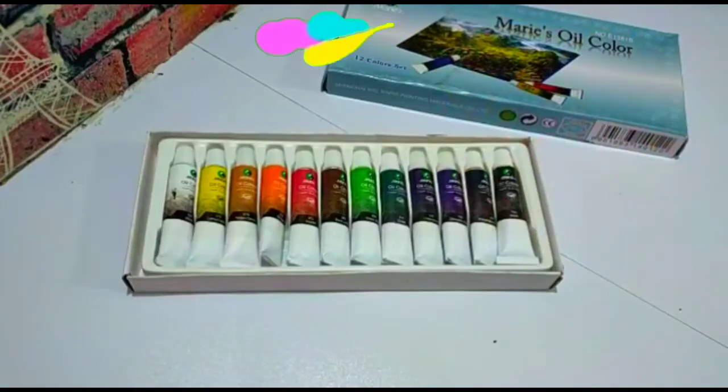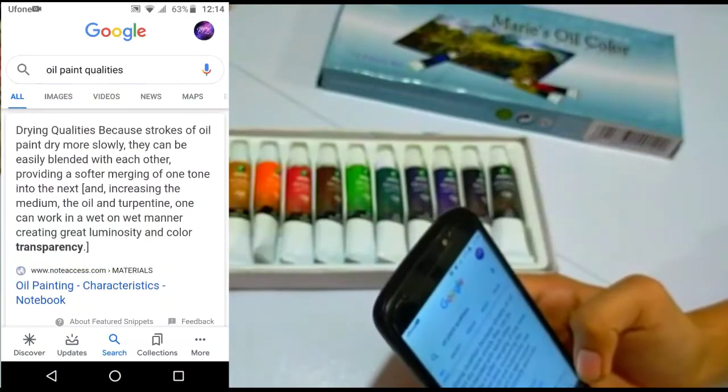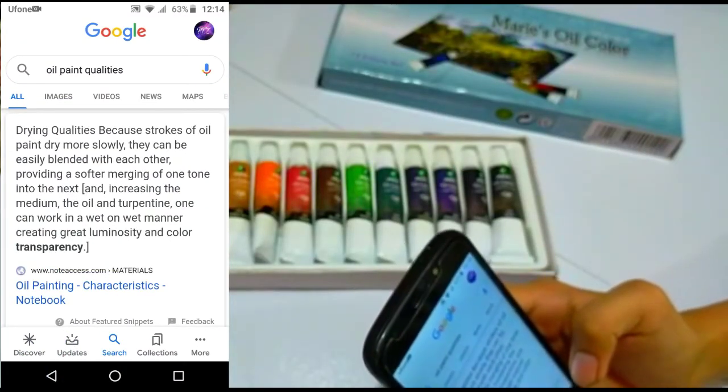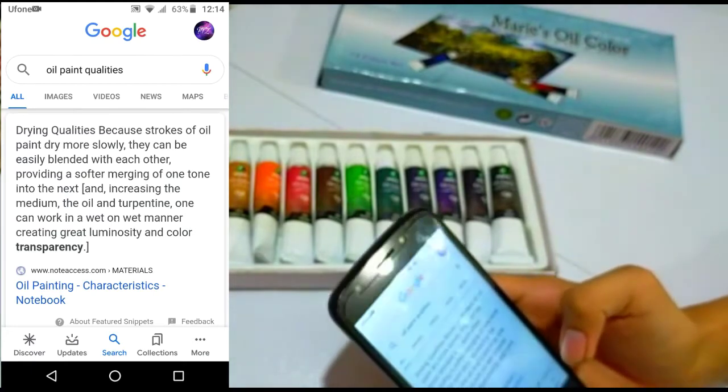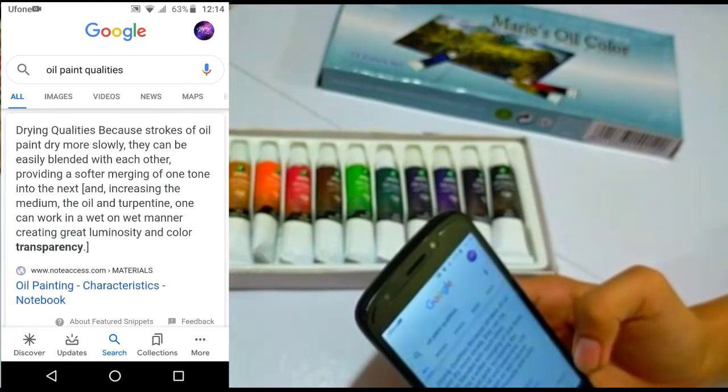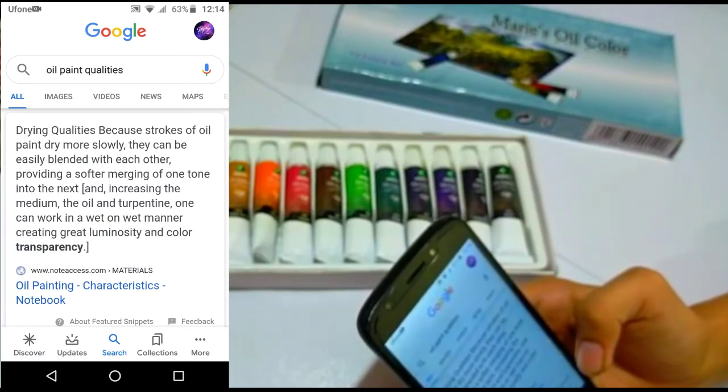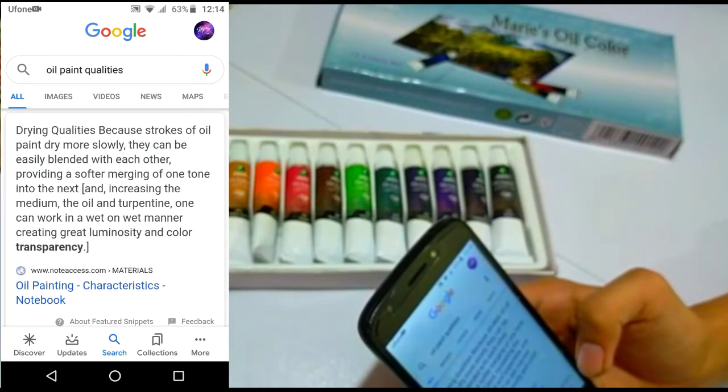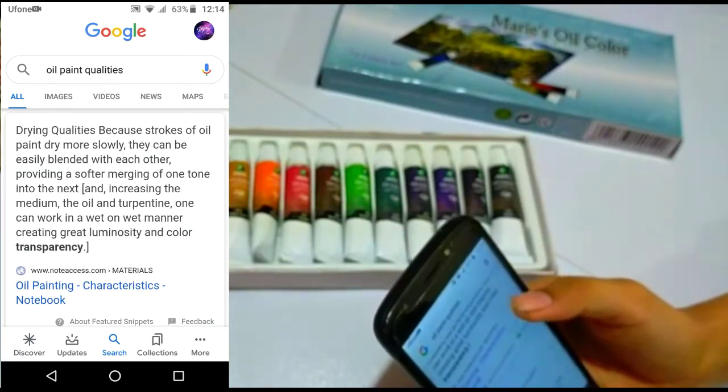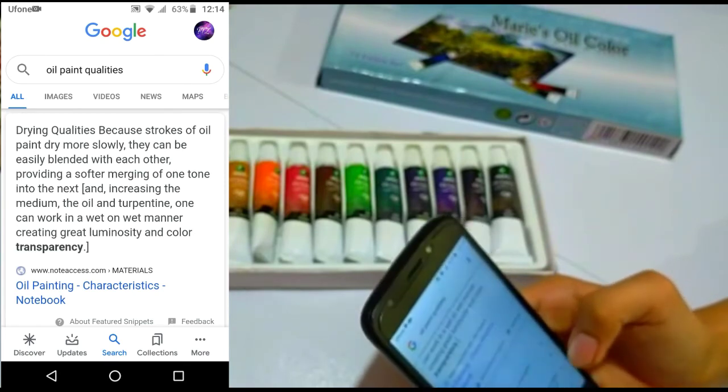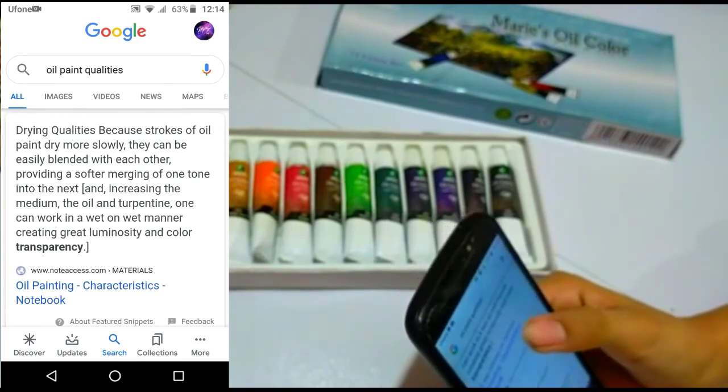So now let's test its quality. So in order to test its quality I got an idea that I'm gonna search on Google about the oil paint qualities and we'll just compare the qualities which Google says. Are they same as the colors which I received or not? So Google says that drying qualities: because the strokes of oil paint dry more slowly, they can be easily blended with each other, providing a soft merging of one tone into the next. So let's test first these qualities what Google says to us.